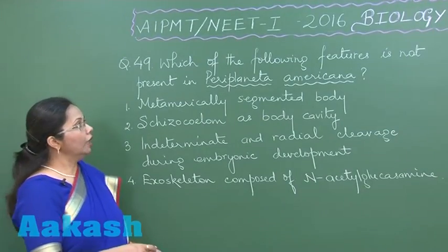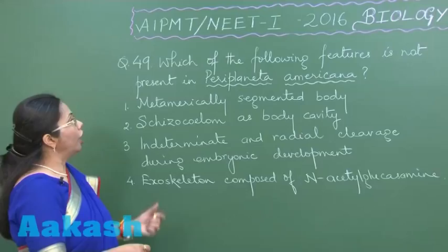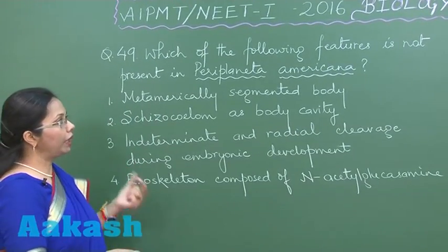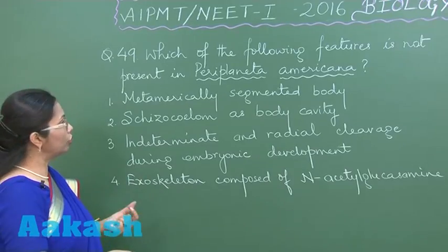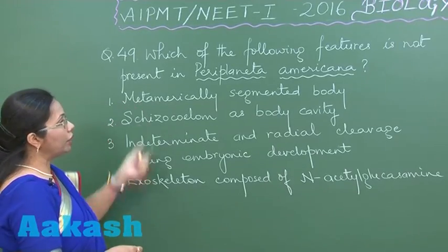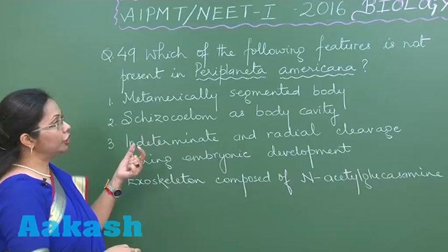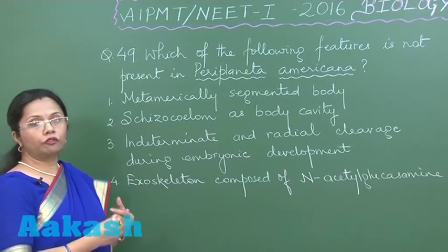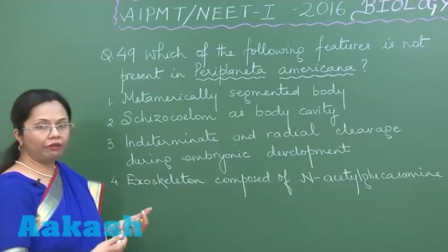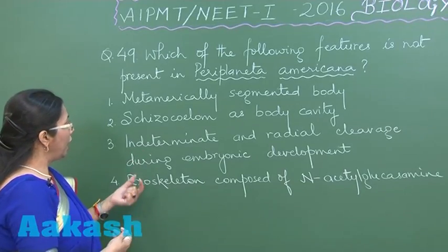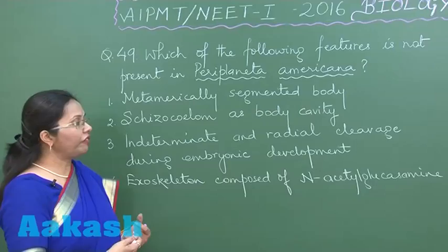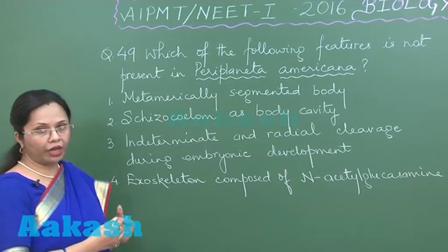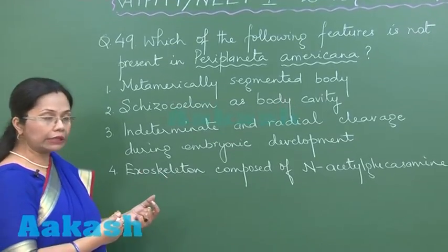Question 49: the feature which is not present in Periplaneta americana, that is cockroach. Metamerically segmented body — that is true for it. Schizocoele formed as a result of splitting of mesoderm as body cavity — that's also correct. Exoskeleton composed of N-acetyl glucosamine, which is the monomer unit of chitin — that's also correct.